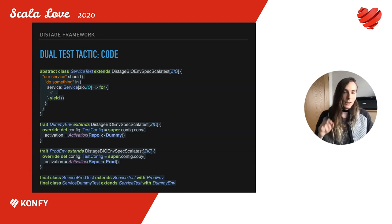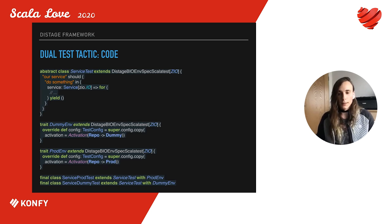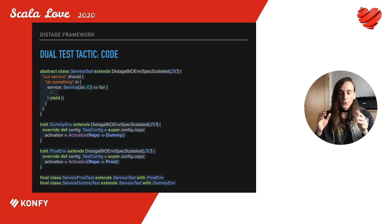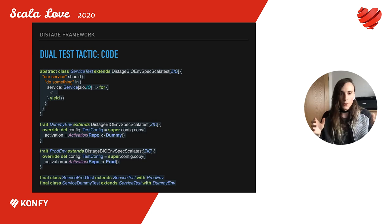Each D.Stage test is a lambda where each argument declares a dependency that D.Stage will provide for the test. In this case the test requests a Service ZIO and does something with it. The tests are written in a functional style using your effect monad — in this case ZIO. Also worth mentioning: you can request your services implicitly using the ZIO environment as well.